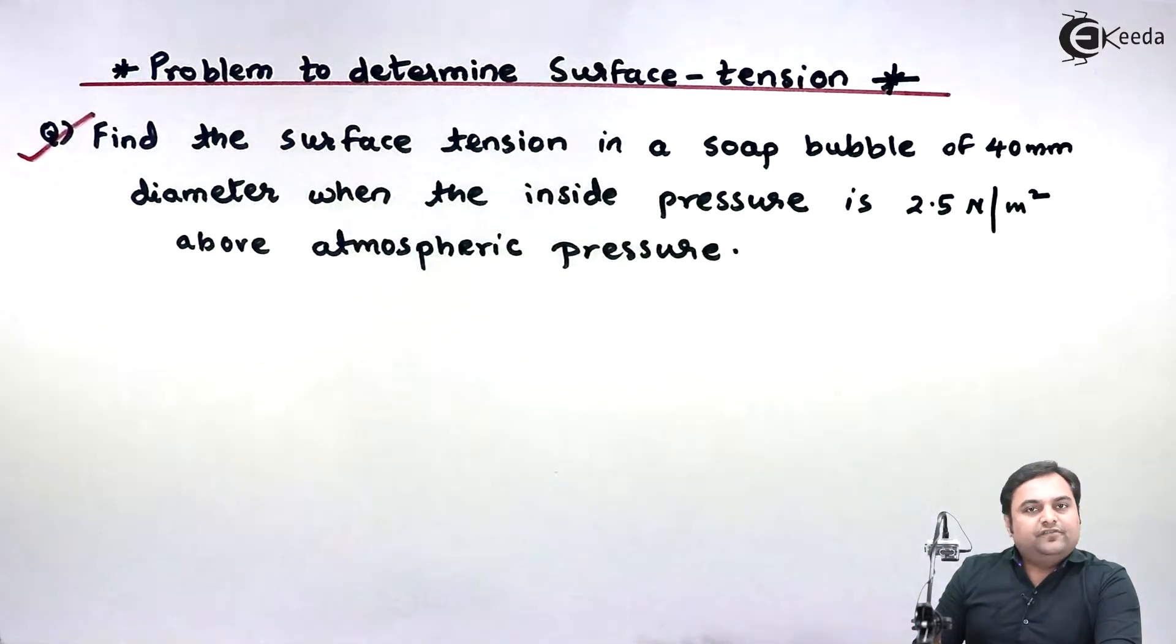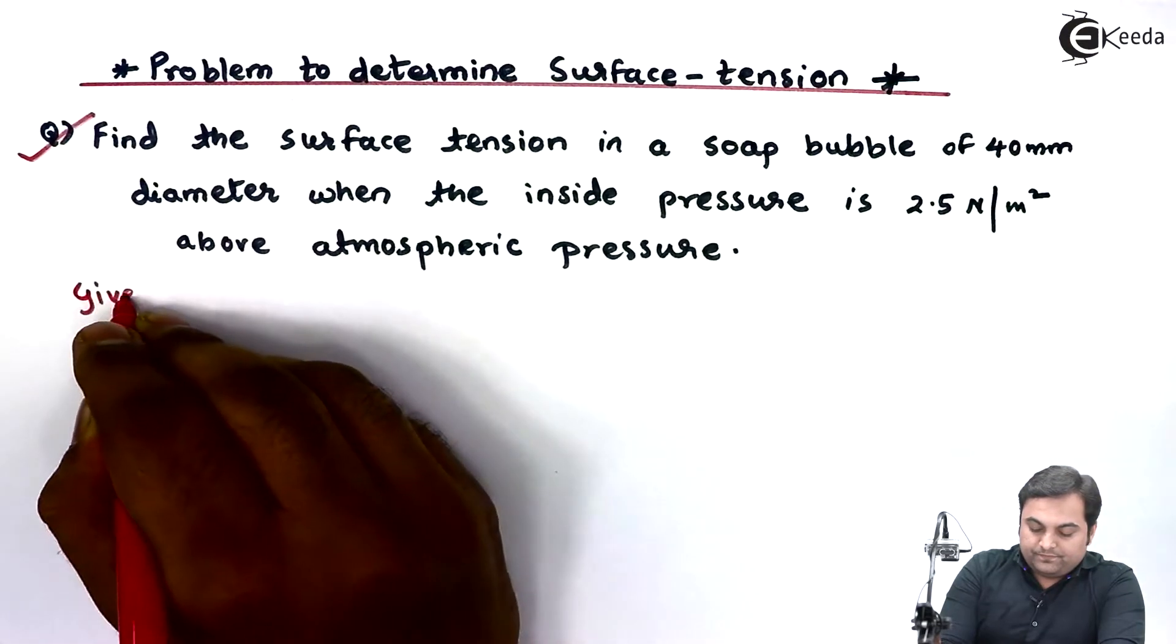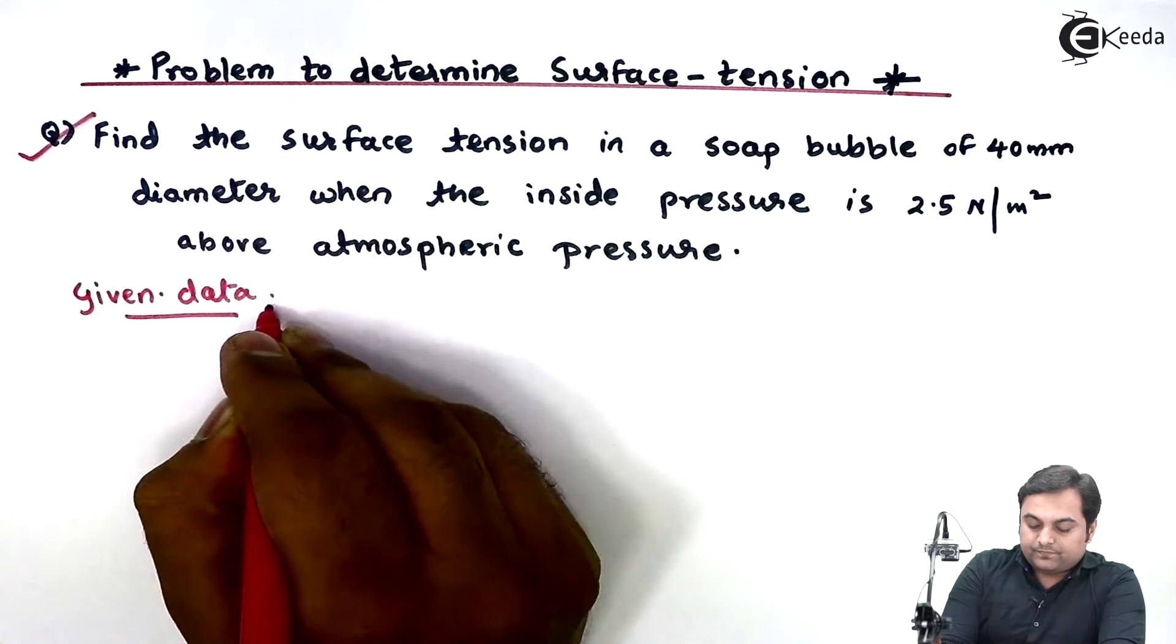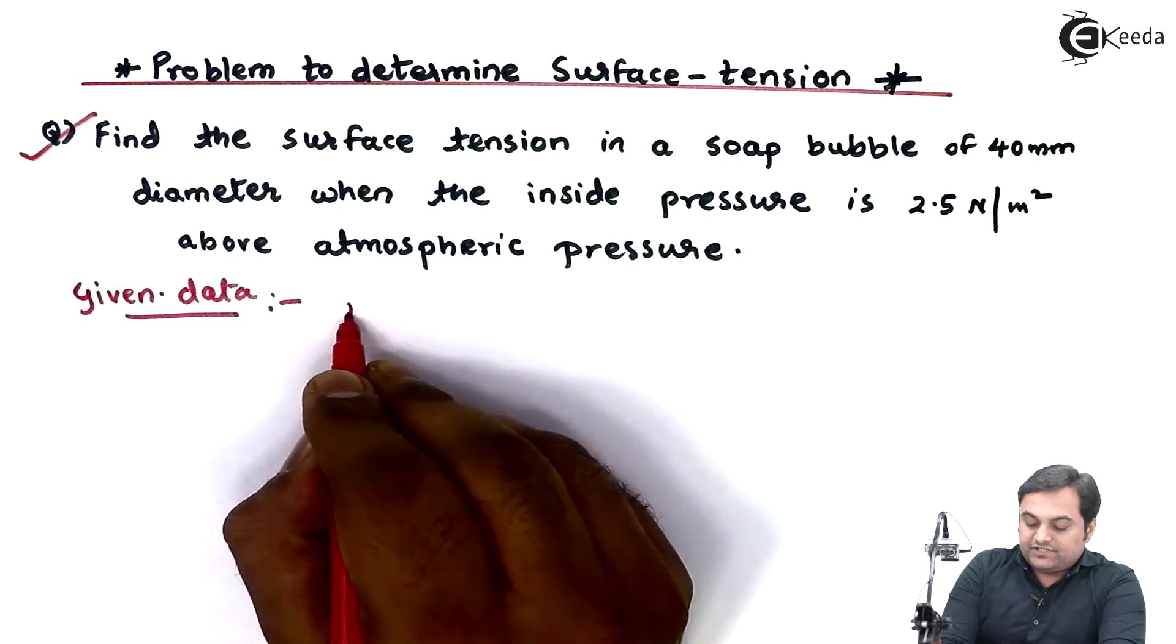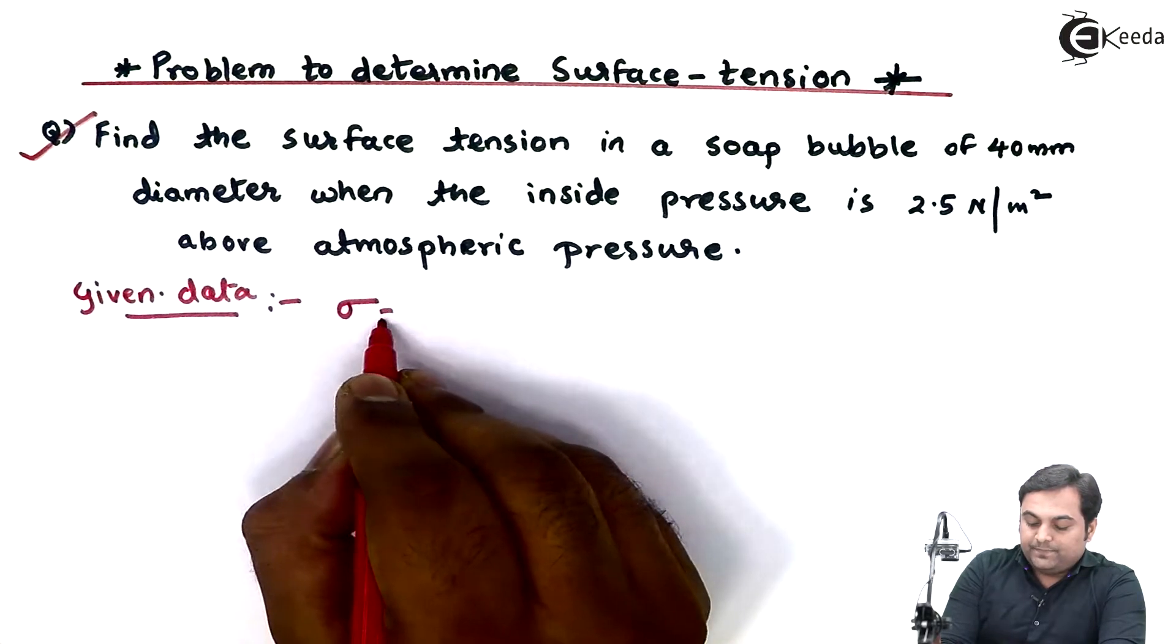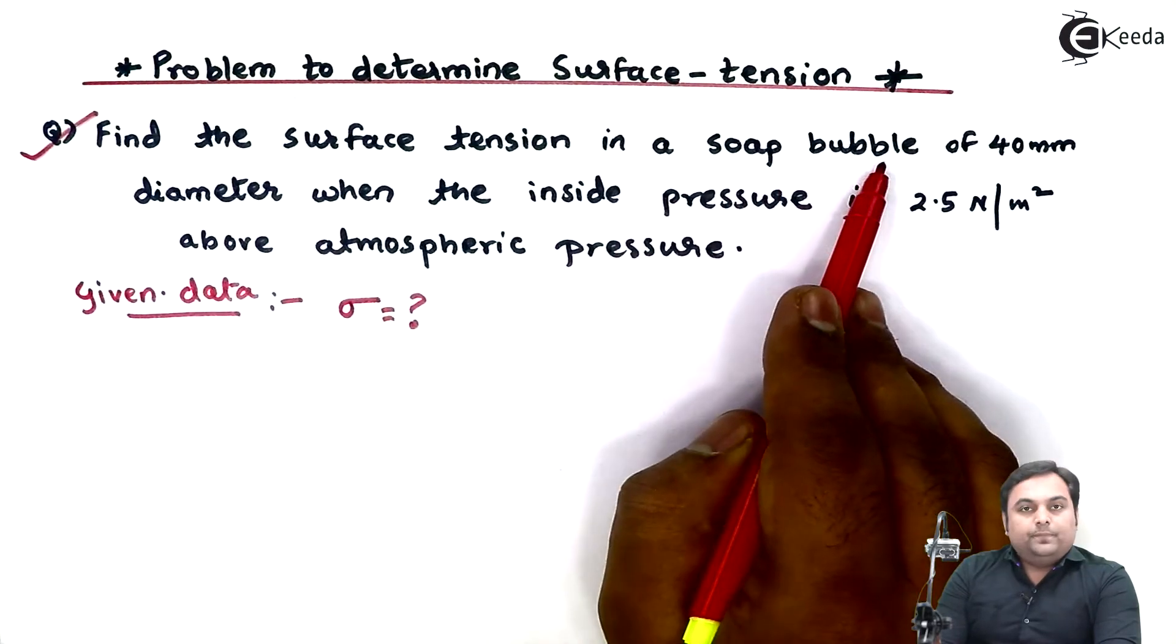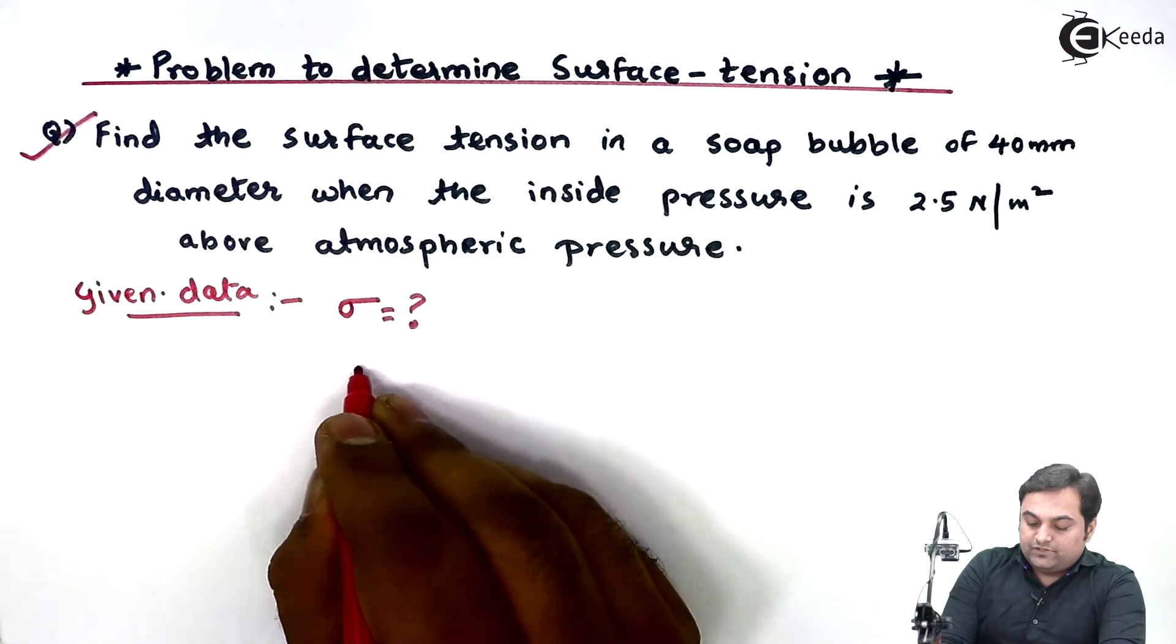This is the question we have. Whatever is given in this question, I will write in the form of given data. We have to find the surface tension, denoted by sigma (σ), in a soap bubble of 40 mm diameter.